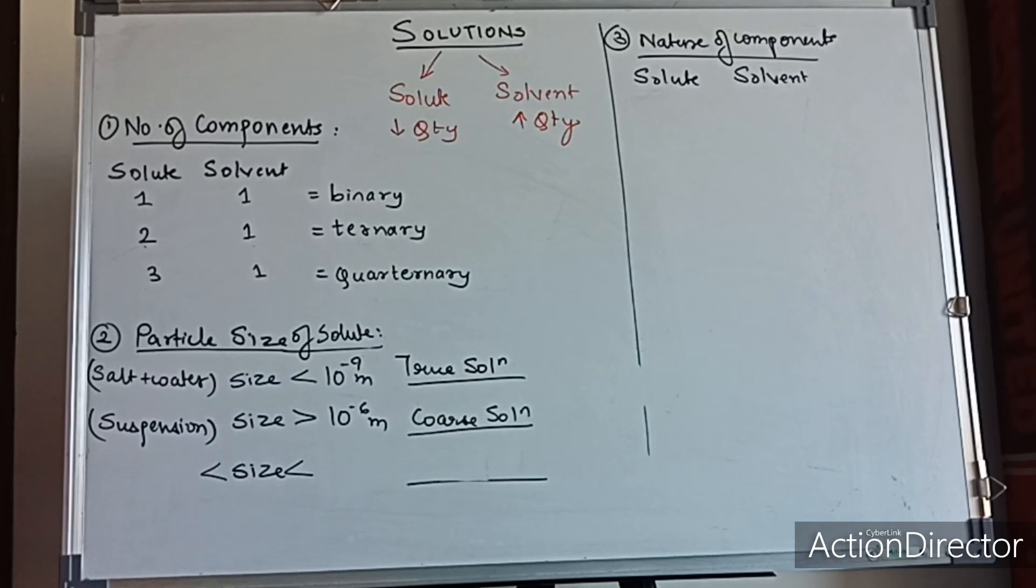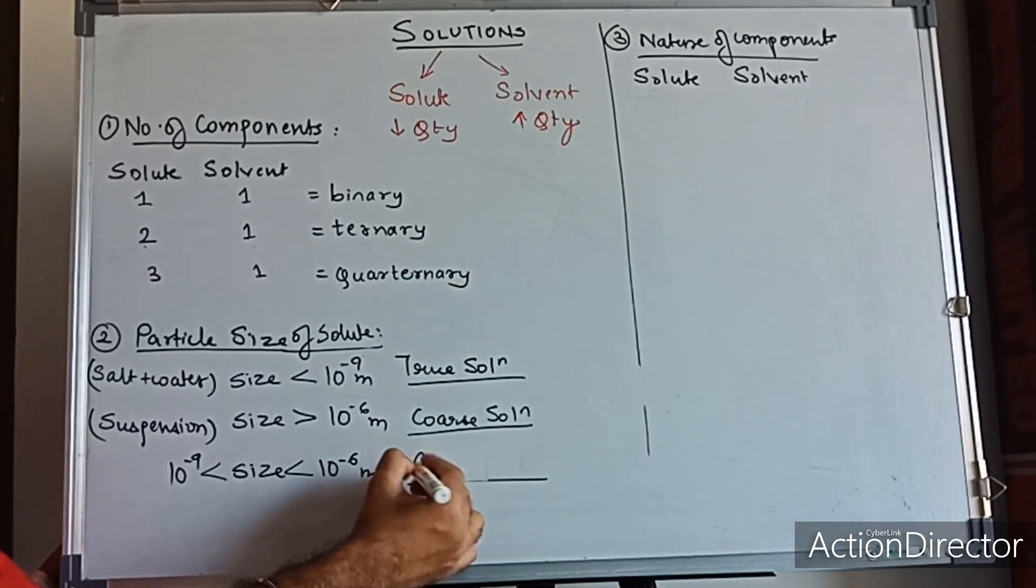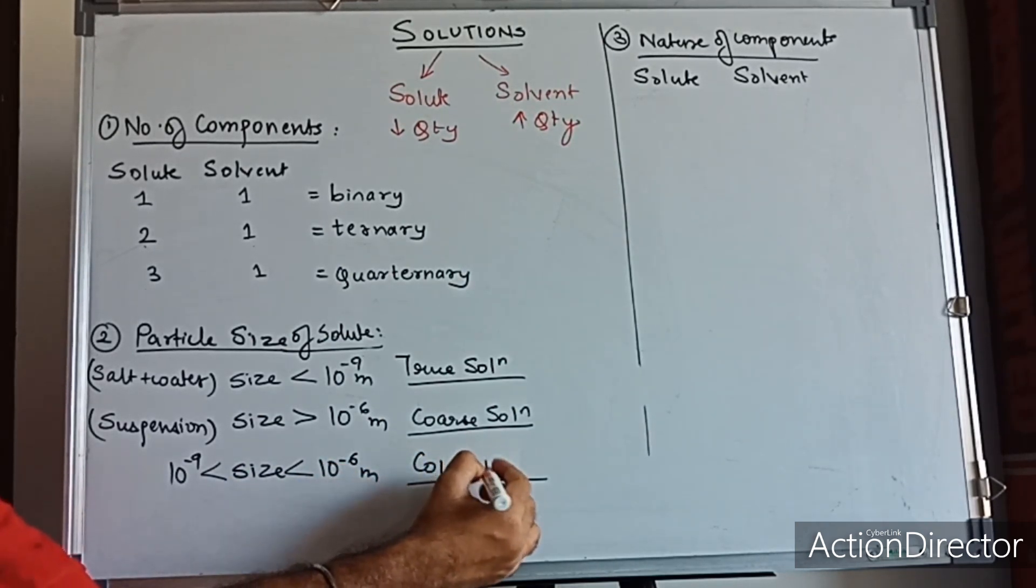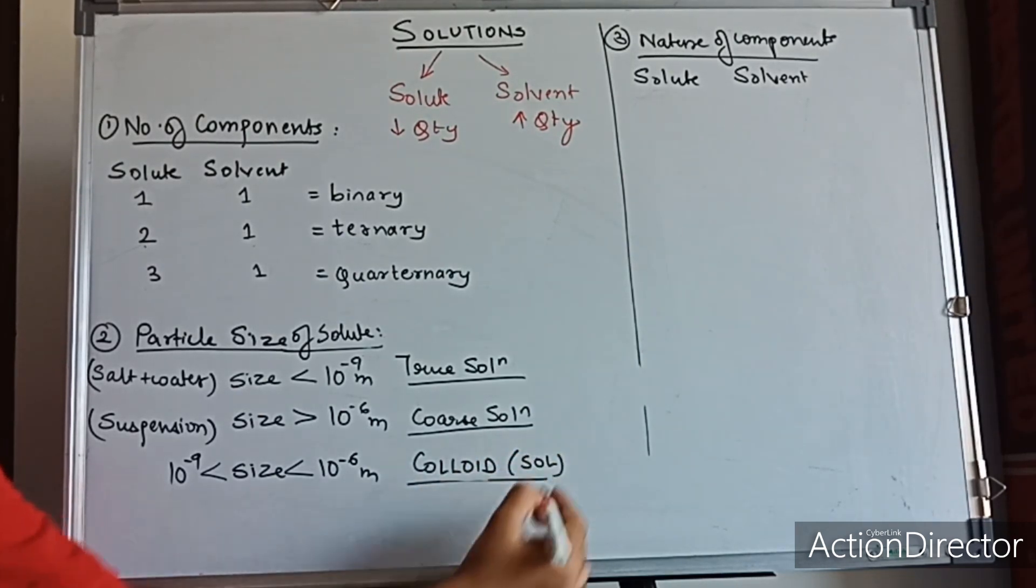Sand plus water - the sand particles should be clearly seen. If the particle size is less than 10 raise to minus 6 and greater than 10 raise to minus 9, matlab 1 nanometer se leke 1 micrometer ke beech ka agar size hai, in that case the solution is called as a colloid or a solute. We have studied about the different types of colloids in a chapter called surface chemistry or adsorption.